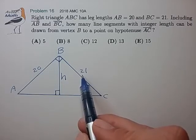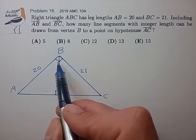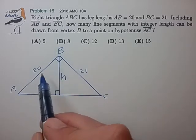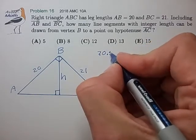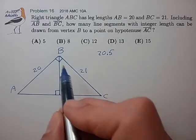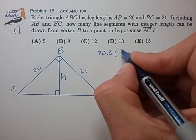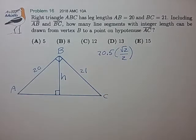why don't we consider an isosceles right triangle whose leg length is the average of 20 and 21, 20.5. If we had such an isosceles triangle, the altitude would be given simply by that length times root 2 over 2.